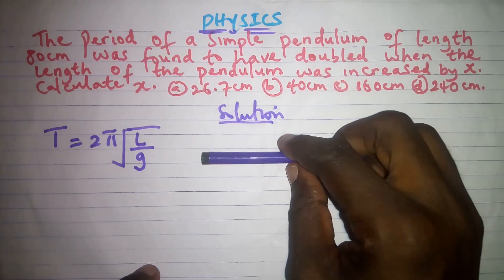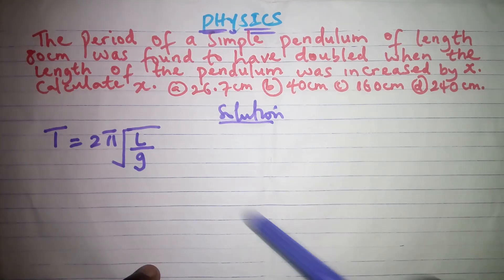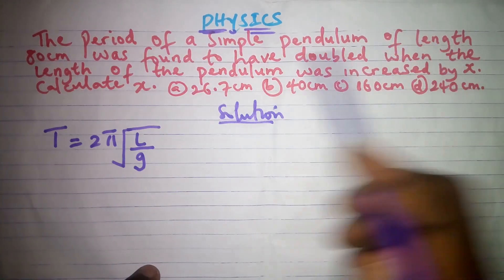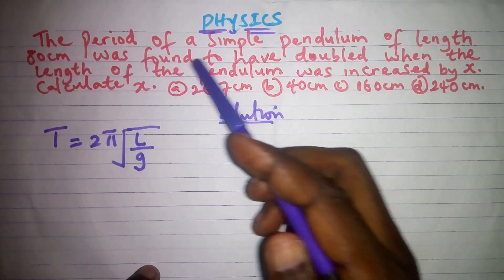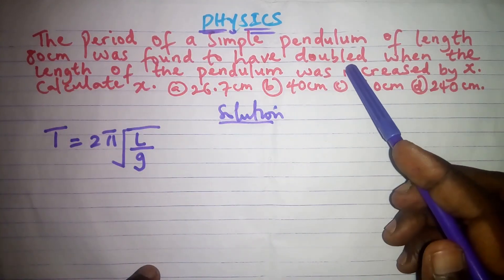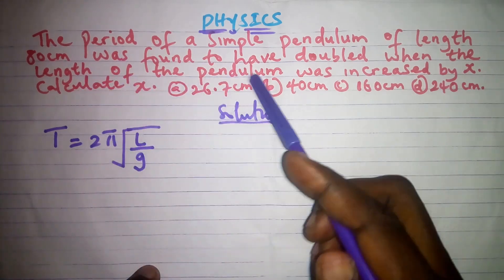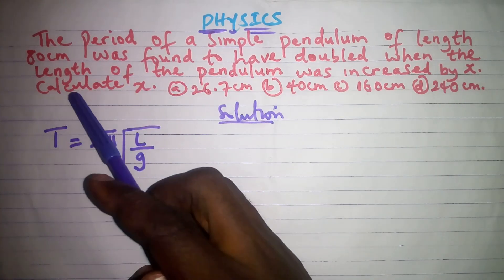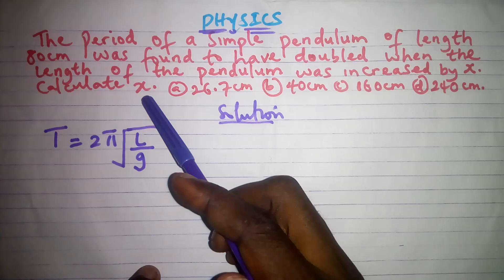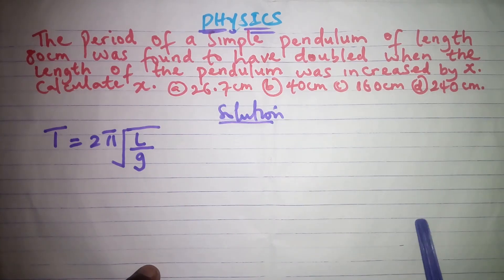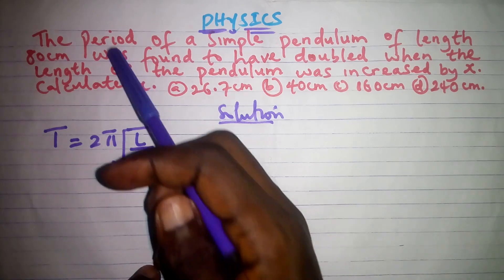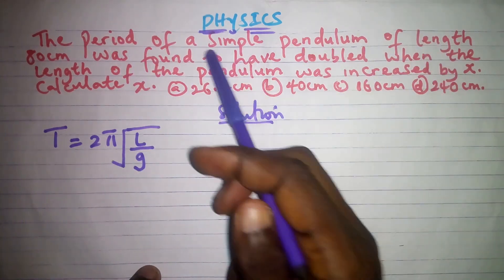We have an interesting question here. It says the period of a simple pendulum of length 80 centimeters was found to have doubled when the length of the pendulum was increased by x. Calculate x. This question is talking about the period and the length of a simple pendulum.